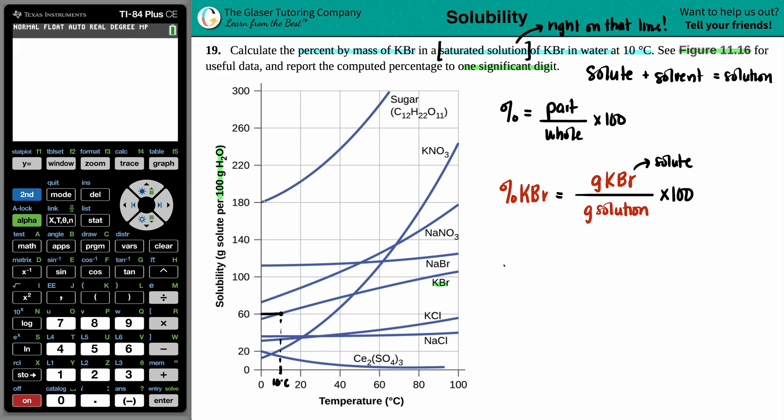So percent KBR equals, we got the solute amount. So 60. But now we need the total solution. Well, in this case, we had KBR as my solute being dunked in the water. That's the solvent. And together they make up the solution. So in this case, my solution amount would be the 60 grams plus the water amount. And the water they told me was 100 grams of H2O. That's the solvent. So I'm going to add 100 grams.